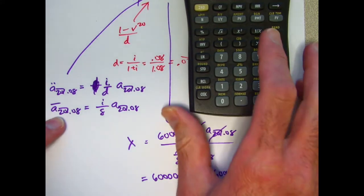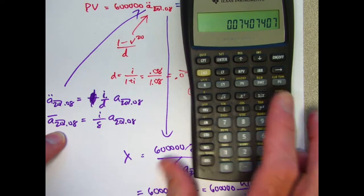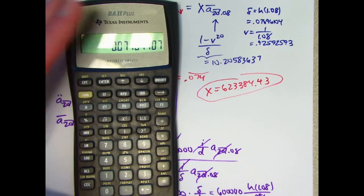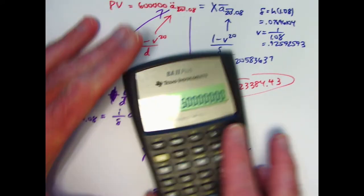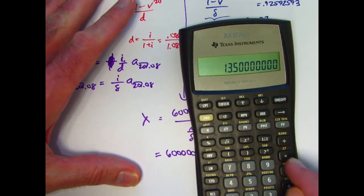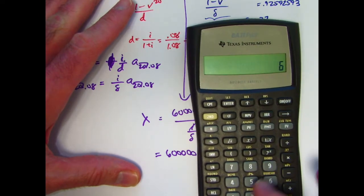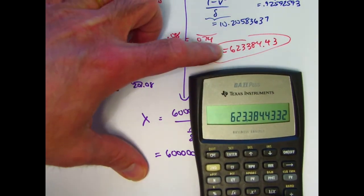And again, delta was in register 0, so I can take the reciprocal of this right there, and multiply by what's in register 0, multiply by delta, and then multiply that by 600,000. And you get the same final answer that we got before.